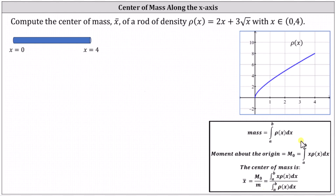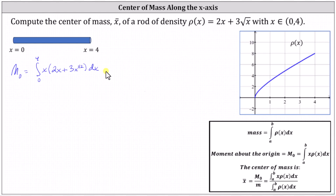Let's begin by determining the moment about the origin, which is equal to the integral from zero to four of x times ρ(x), giving us x times the quantity (2x + 3√x). We'll write 3√x as 3x^(1/2) dx. Distributing the x gives us the integral from zero to four of 2x² + 3x^(3/2).